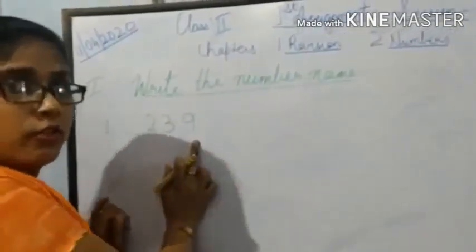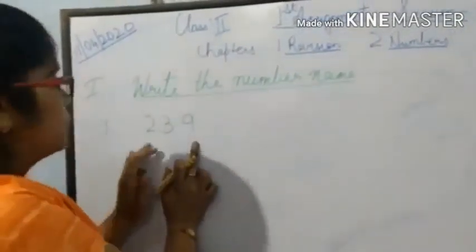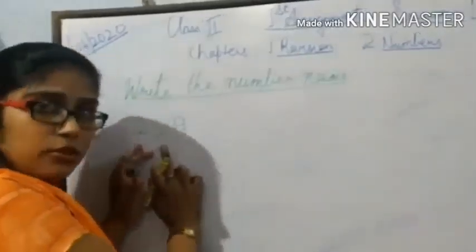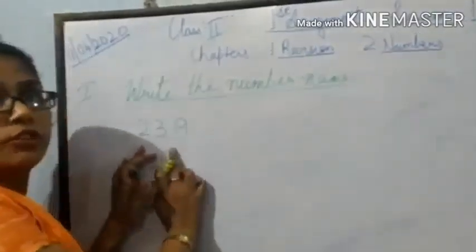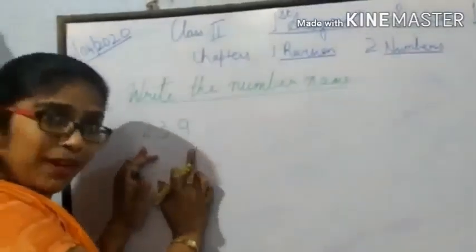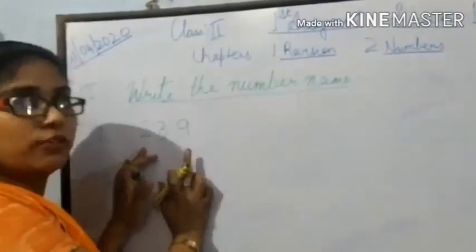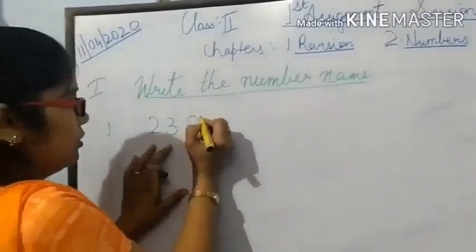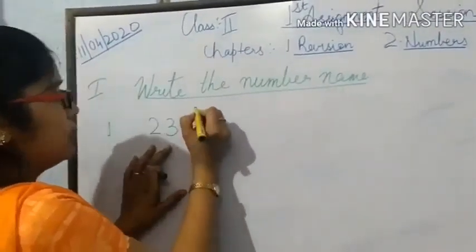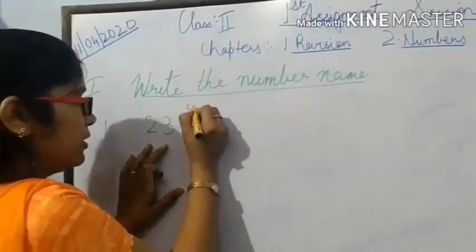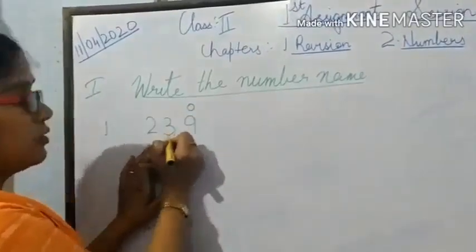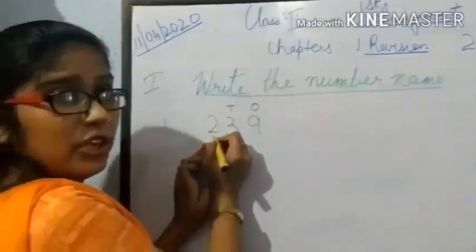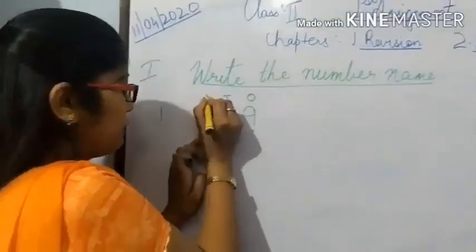The first number is 239. For writing the number name of the given numbers, we should know the place value. So: 9 is in the 1's place, 3 is in the 10's place, and 2 is in the 100's place.